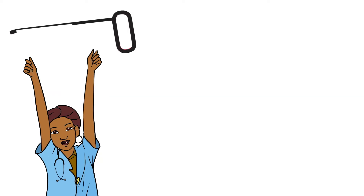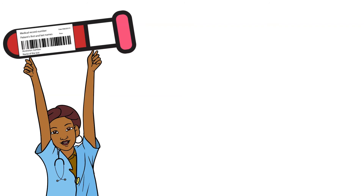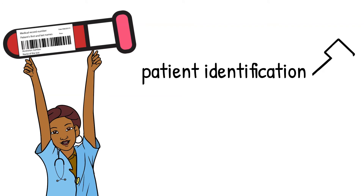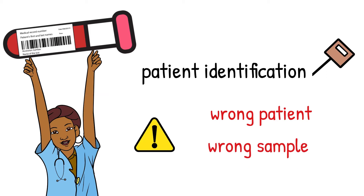Let's start from the top. When a specimen is received in the laboratory, usually it is the laboratory assistant who will receive and accession the specimen to make sure that it meets specimen collection standards. Remember, patient identification is the most important step. Wrong patient means wrong sample, which means wrong test results. ABO blood group incompatible transfusions can cost the patient their life within minutes. If you want to refresh on specimen rejection criteria or specimen collection standards, you can find a link in the description box below.